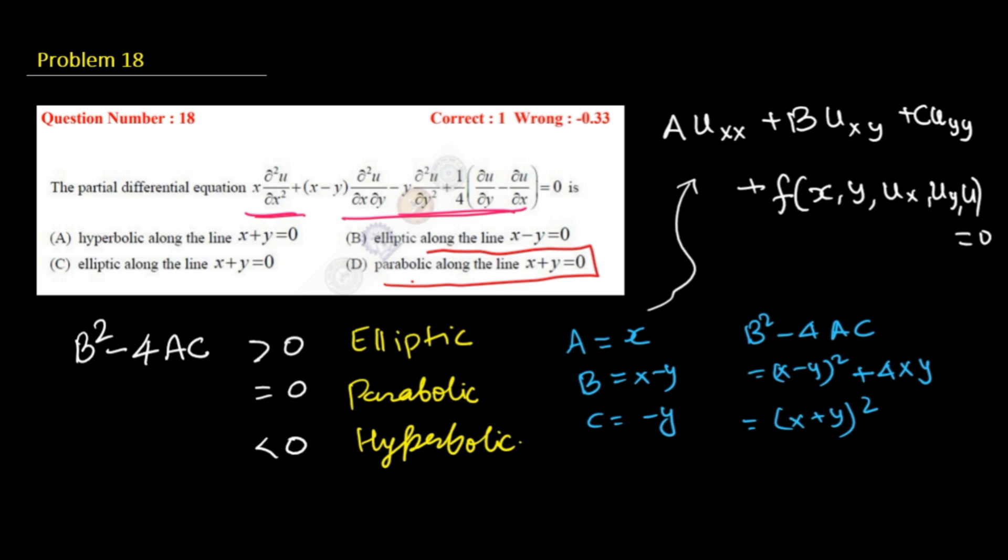Option D states that it will represent the parabolic along the line x+y=0. If the line will be x+y=0, then the discriminant will be 0, which means it will represent the parabolic. So option D is correct. The correct option is option D. Thank you.